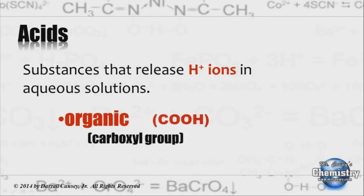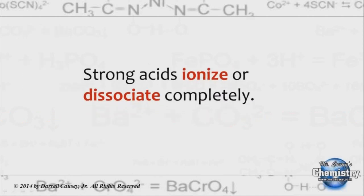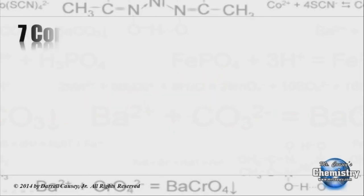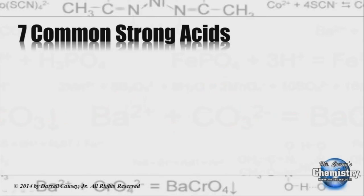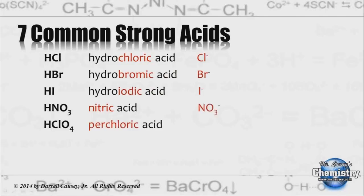Remember, strong acids ionize or dissociate completely. We have seven common strong acids: hydrochloric acid, hydrobromic acid, hydroiodic acid, nitric acid, perchloric acid, chloric acid, and sulfuric acid.